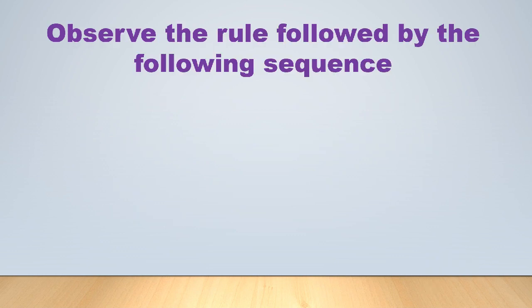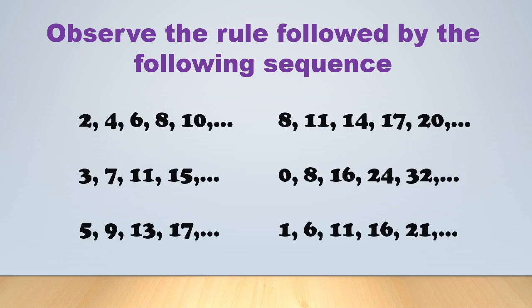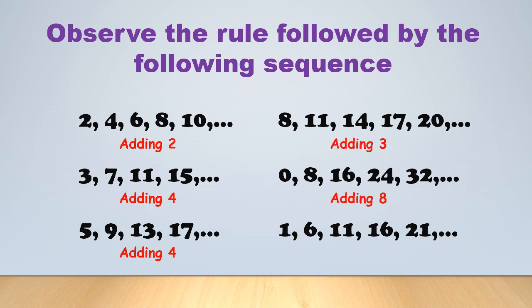Let's observe the rule followed by the following sequences. You'll notice they all follow almost the same rule — adding a fixed number. In 2, 4, 6, 8, 10 you are adding 2. In 3, 7, 11, 15 you are adding 4. In 5, 9, 13, 17 you are also adding 4. In 8, 11, 14, 17, 20 you are adding 3, then 8, then 5 for the last one.